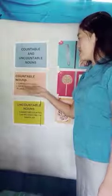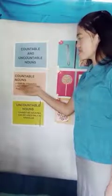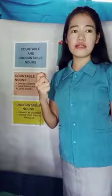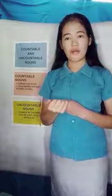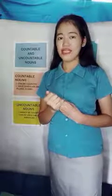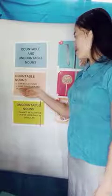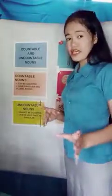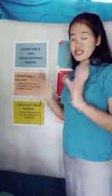Countable nouns are nouns that can be counted. For example, a ball — a ball can be counted. How about a lollipop? Is it a countable noun? Yes, very good! Countable nouns have singular and plural forms. Let us find out more as we proceed to its examples.